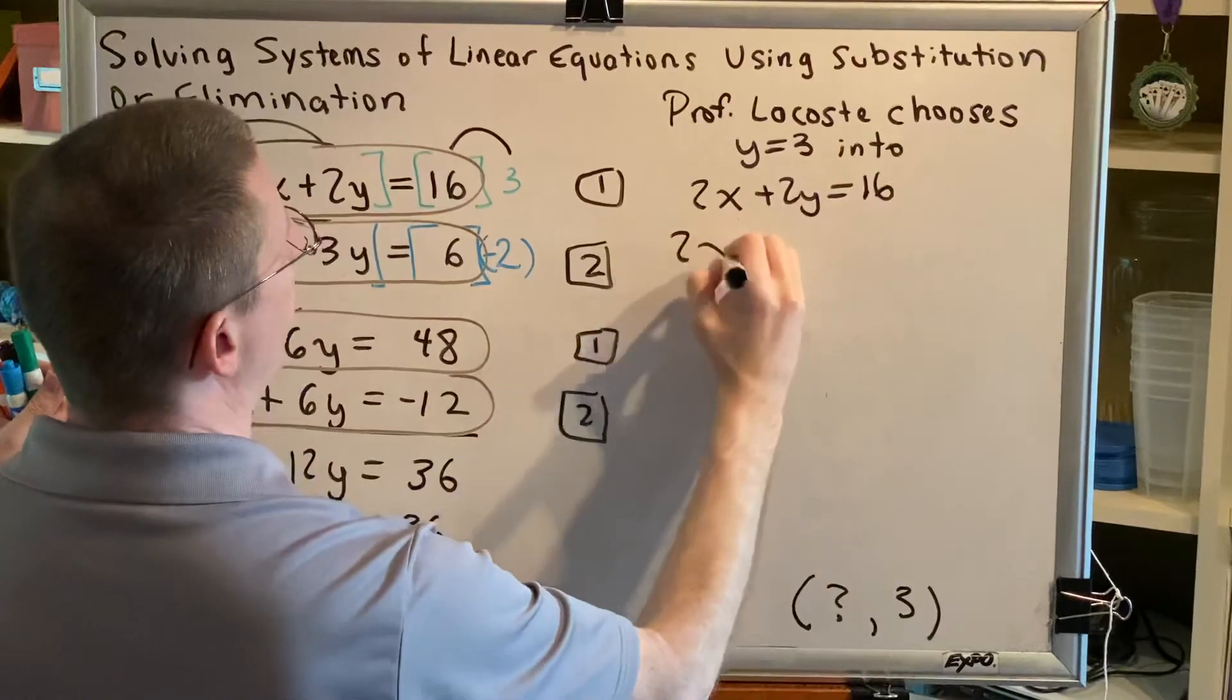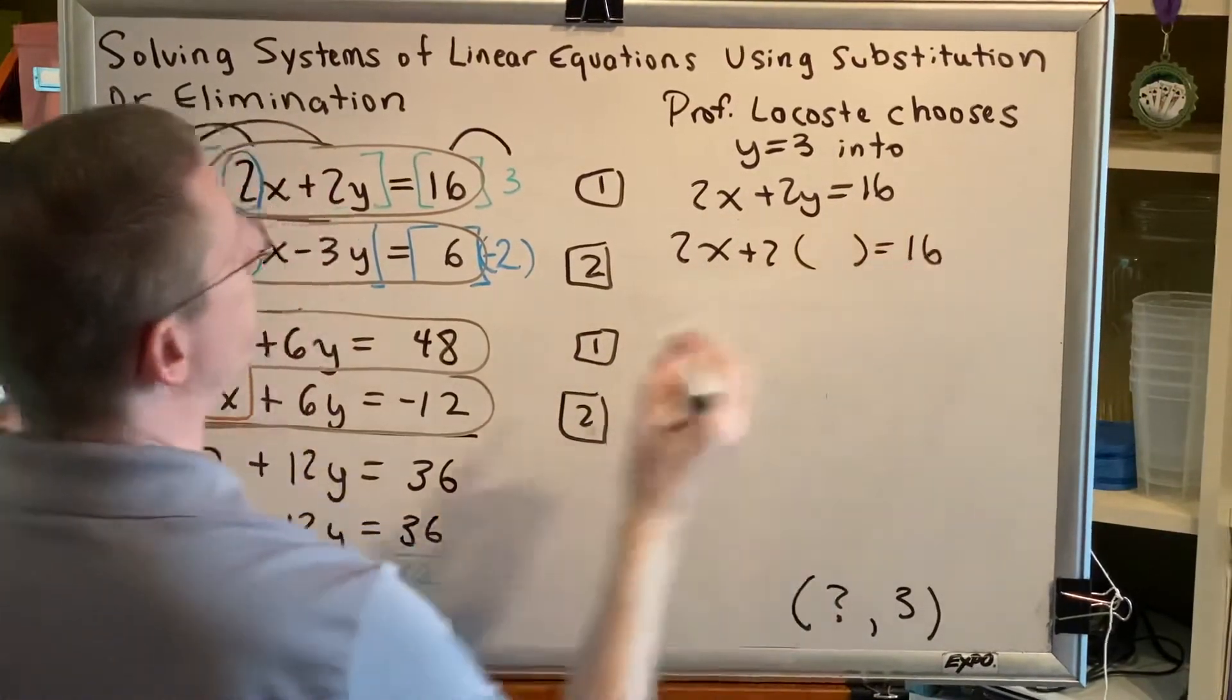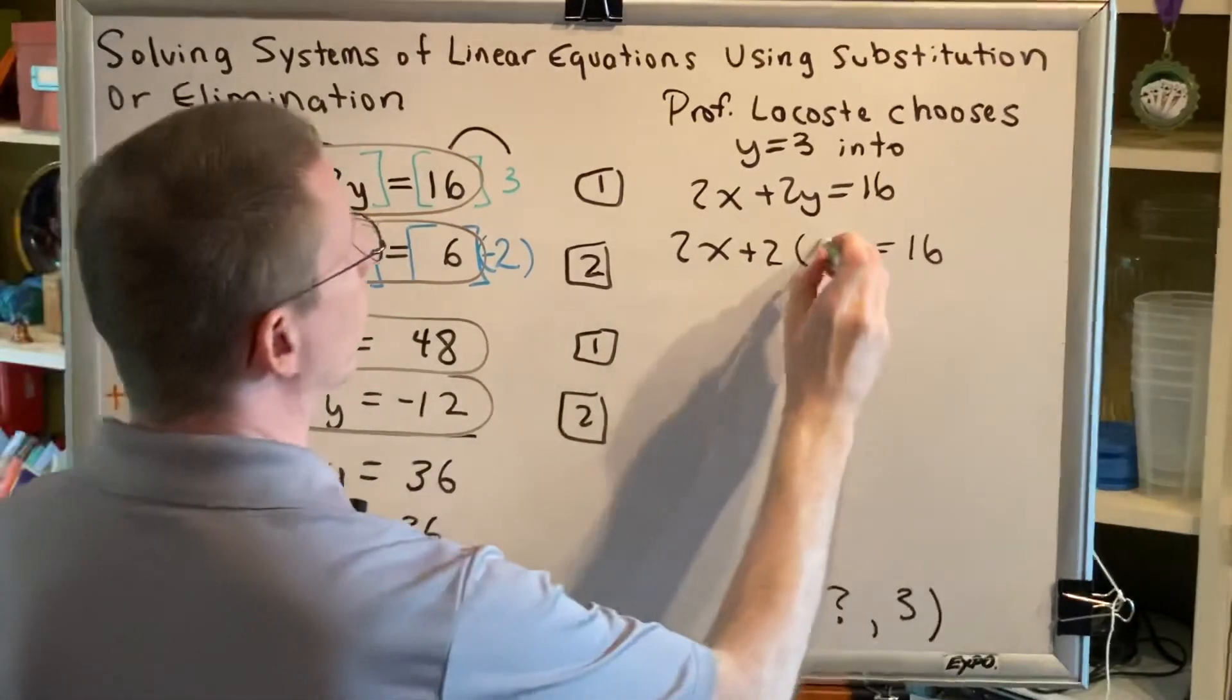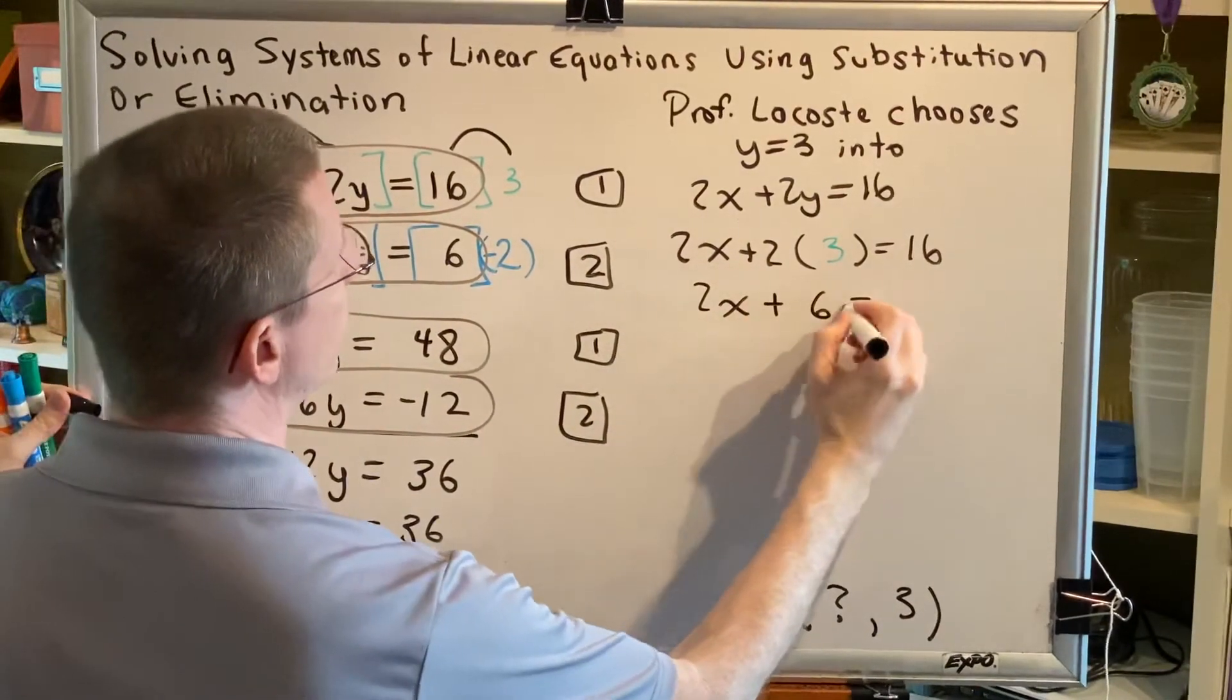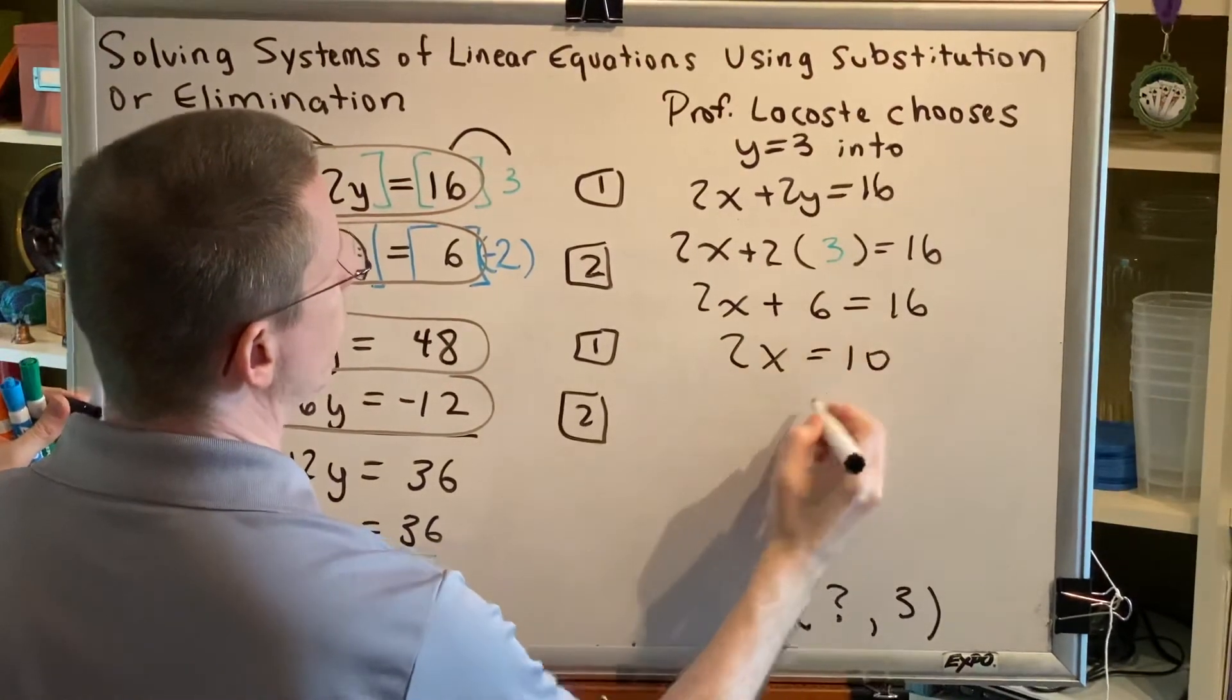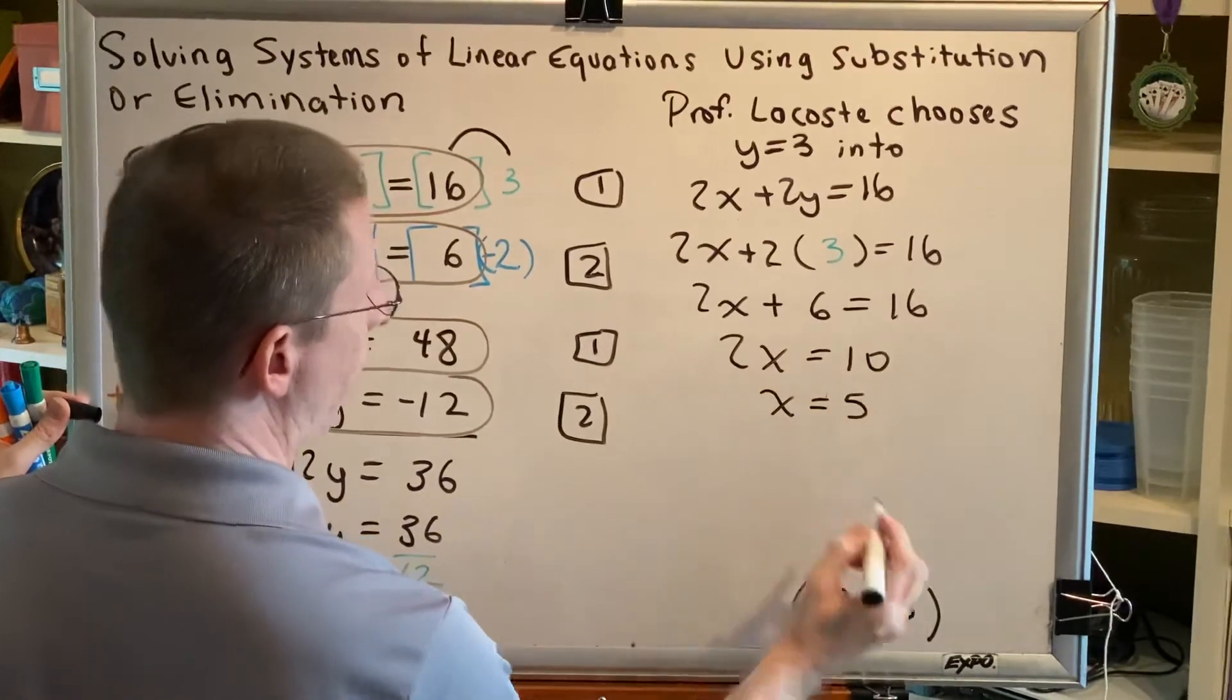So I'm going to get 2x plus 2 times the value of y is equal to 16. y, of course, is equal to 3. So now we have 2x plus 6 equals 16. Subtracting 6 on both sides gives us 2x equals 10, and dividing by 2 on both sides gives us x equals 5.